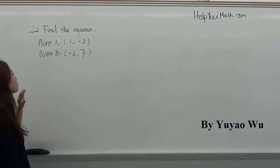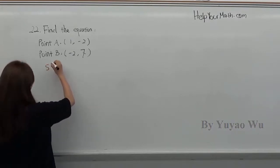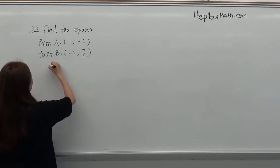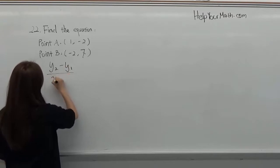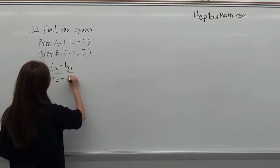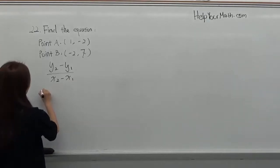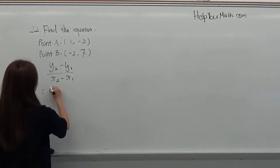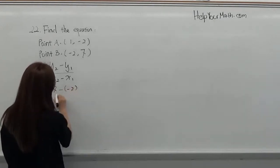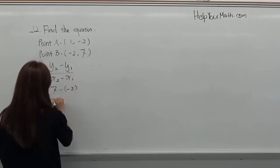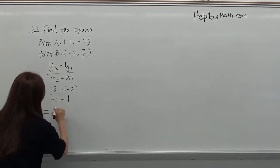The first thing we have to do is find the slope first, so we use the slope equation. The slope equation is y2 minus y1 divided by x2 minus x1. We just bring these two points into this equation, so it's 7 minus 2 divided by negative 2 minus 1.